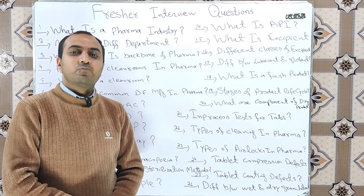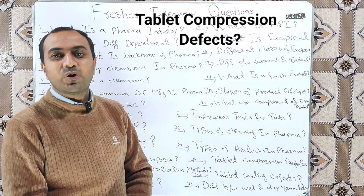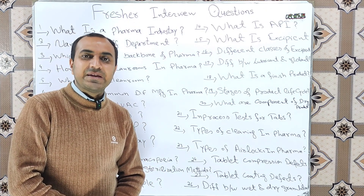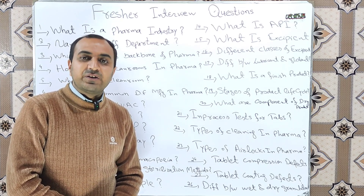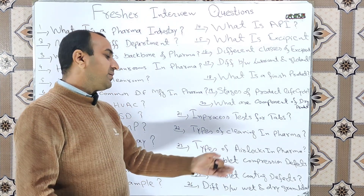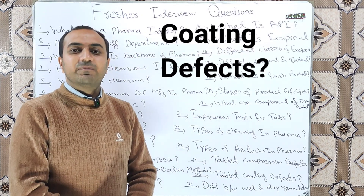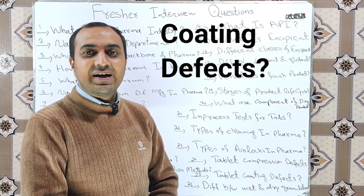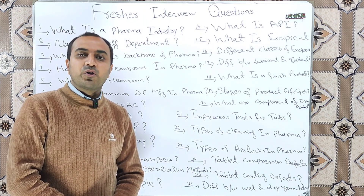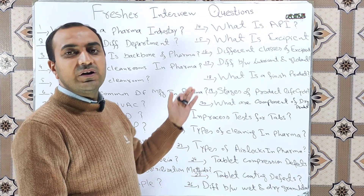What are the most common tablet compression defects? The most common tablet compression defects are sticking, picking, capping, lamination, weight variation, and flow problems. What are the most common tablet coating defects? The most common tablet coating defects are sticking, picking, twinning, bridging, orange peel, color variation, and weight gain issues.